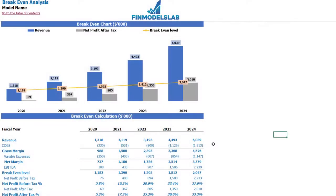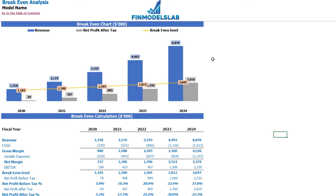On the break-even tab you may find the calculation of the revenue break-even level and a break-even chart. For this particular use case, the revenue break-even level is less than the actual revenue calculation, which means that the company is profitable.